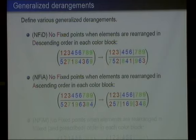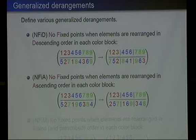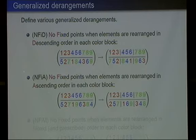Since we started with descending order, we can also deal with ascending order. Here is the definition: no fixed point when elements are rearranged in ascending order in each block. For each block, for example five to seven is rearranged in ascending order, then there is no fixed point in this block. This is an example of an NFIA permutation.